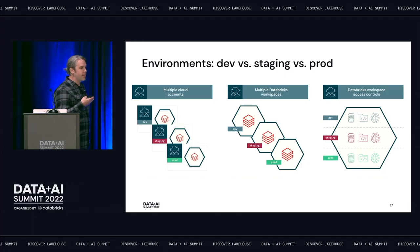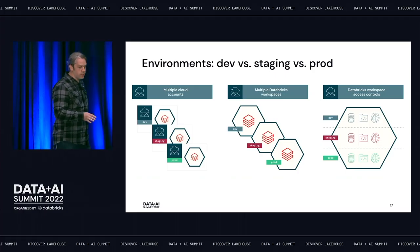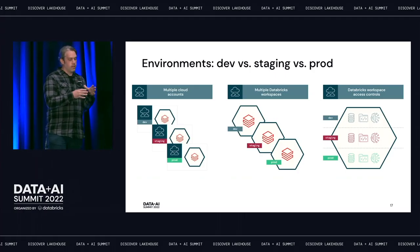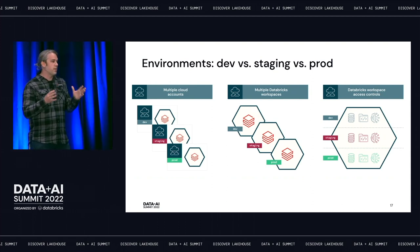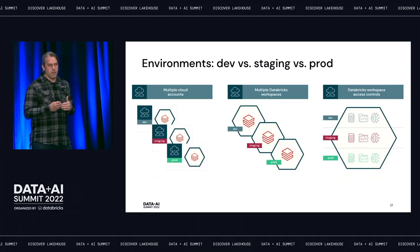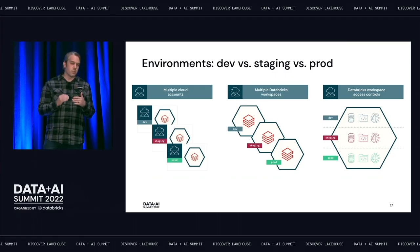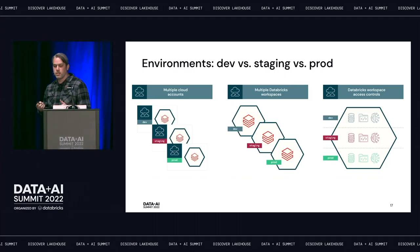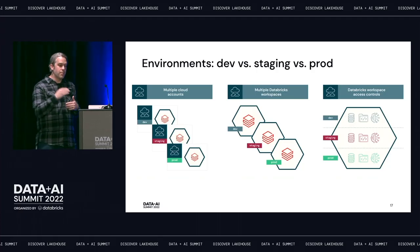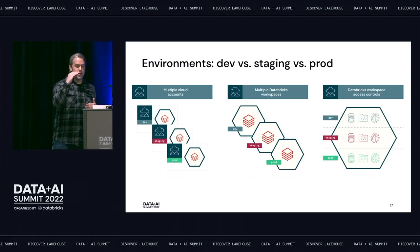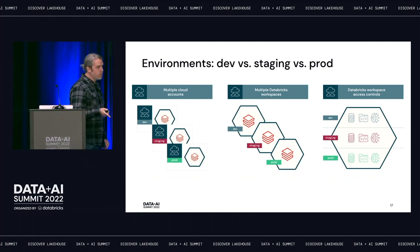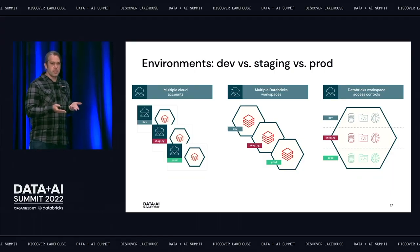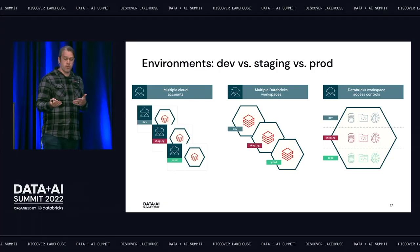How do you achieve that isolation on Databricks? You could have multiple cloud accounts, each with a Databricks workspace — completely separated at the cloud account level. The second option is multiple Databricks workspaces isolated at the network level within a single cloud account. The third option is within a single Databricks workspace using Databricks' native access controls. We generally recommend the middle approach of separate Databricks workspaces, but depending on your resources, either of the other options can also work.